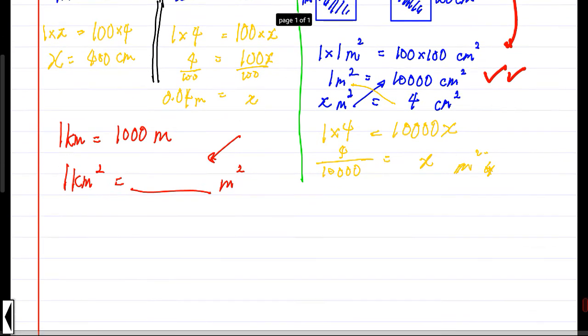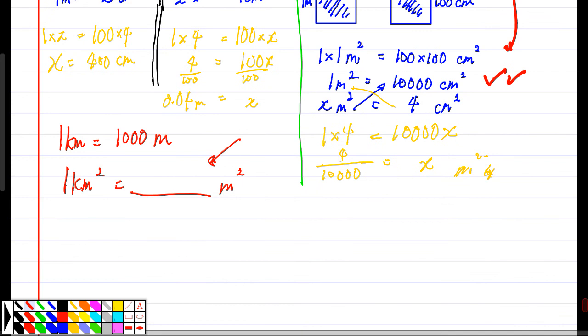Okay, now let's discuss the answer. So 1 kilometer squared, I know, is 1 times 1 kilometer squared, so it will be 1,000 times 1,000 meters squared, and this will be 1 million meters squared.